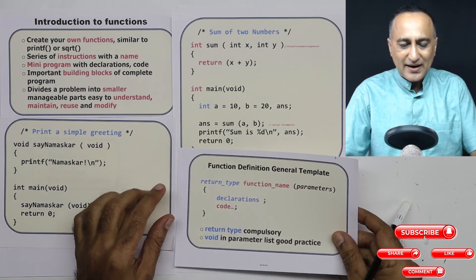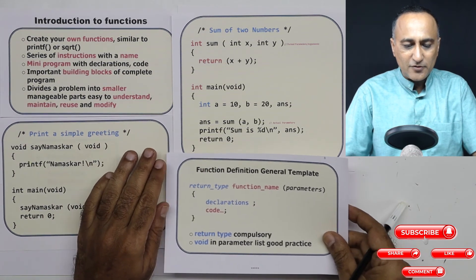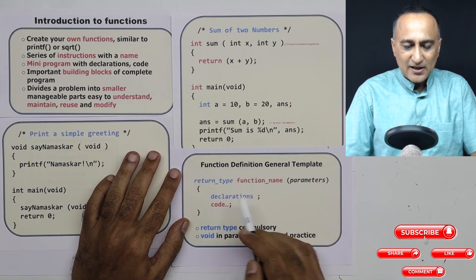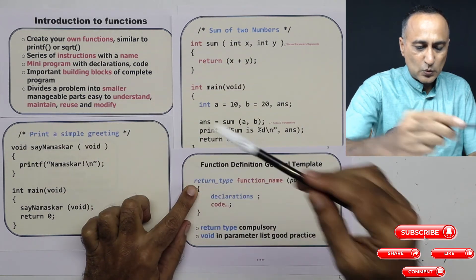Now if you have to look at the general template of a function, the general template of a function is going to look something like this. The function will have a return type: in this case it was int, here it was void.